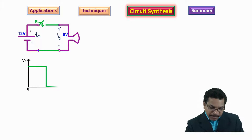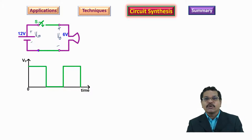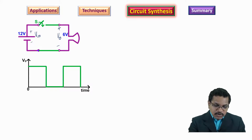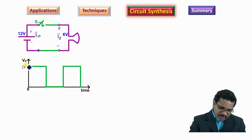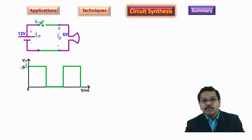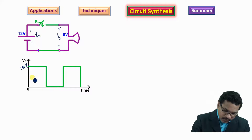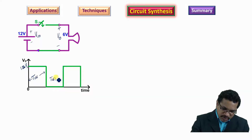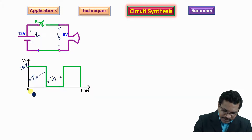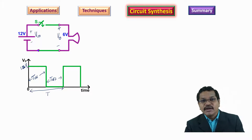If we plot the output voltage versus time: when the switch is closed, the load sees 12 volts; when the switch is open, the circuit is open and the load voltage is zero. We turn on the switch for some duration and turn it off for some other duration, doing this periodically. Therefore, this is called a switched mode circuit.